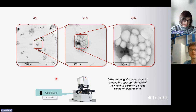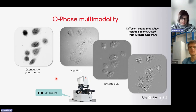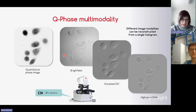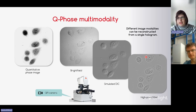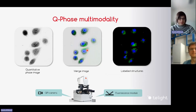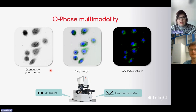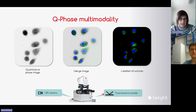In the images you can compare the differences between fields of view and appreciate the details that can be captured. Because the hologram is complex information about the light wave, we can reconstruct other outputs different from the quantitative phase image — such as a high-pass filter image, simulated DIC, or bright field image. We can also add a fluorescence module to the side port of the microscope to supply specificity to some experiments.